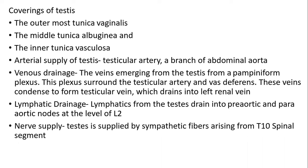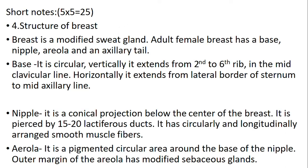Testis is supplied by sympathetic fibers arising from the thoracic and spinal segments. Fourth question: structure of breast. Breast is a modified sweat gland. Adult female breasts have a base, nipple, areola and axillary tail. The base is circular. Vertically, it extends from the 2nd to 6th rib in the mid-clavicular line. Horizontally, it extends from the lateral border of the sternum to the mid-axillary line.